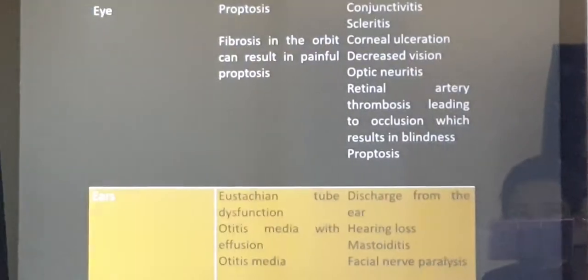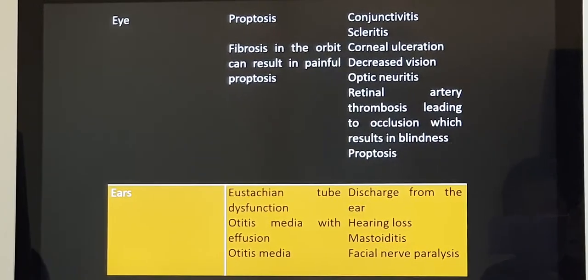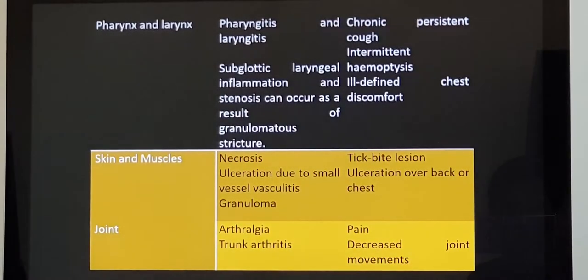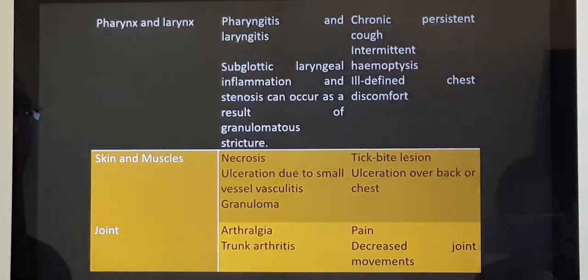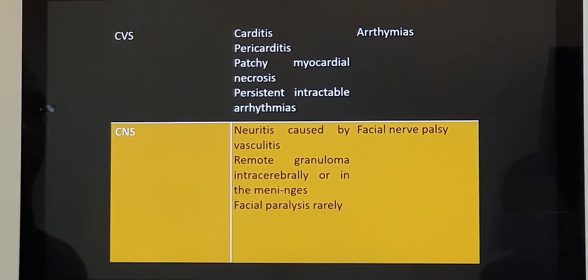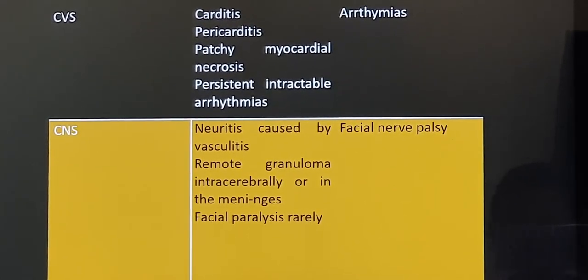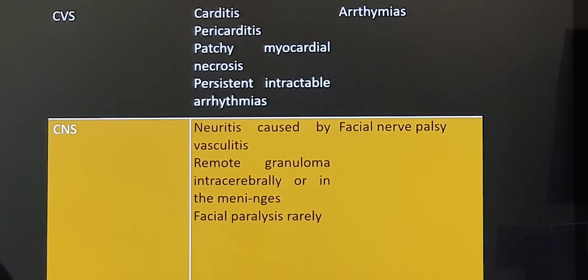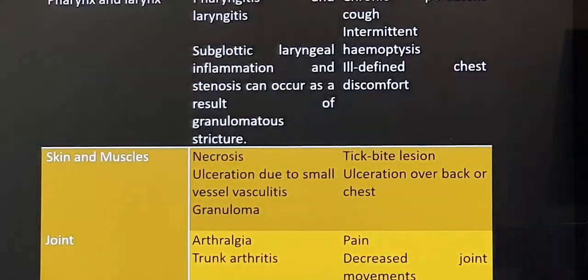Now not only these organs, you have so many organs involved like eye, ears, pharynx, skin, joint, and central nervous system and cardiac system also. So every system is involved. But in short, the main three parts which are involved are nose, lung and kidney.